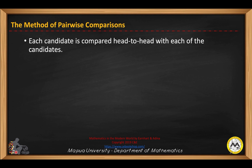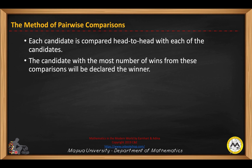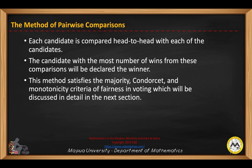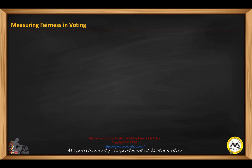For the method of pairwise comparisons, each candidate is compared head-to-head with each of the other candidates. The candidate with the most number of wins from these comparisons will be declared the winner. This method satisfies the majority, Condorcet, and monotonicity criteria of fairness in voting, which will be discussed in detail in the next section.